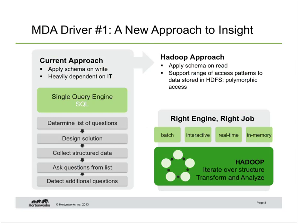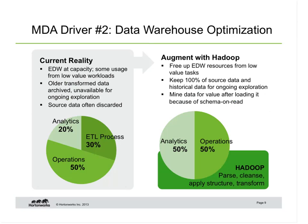Looking at the traditional approach to working with a data model or schema: typically a project is launched to design and build a schema, then populate it and run queries against it — a very structured approach. What we're seeing now with a schema-on-read approach is the ability to decouple the schema from the physical data. With HDP 2.0 we can run batch, interactive, real-time, and in-memory workloads, with an iterative approach to building and working with our data at petabyte scale.